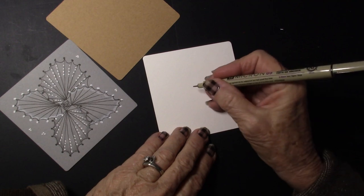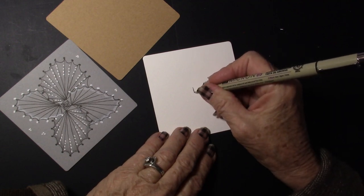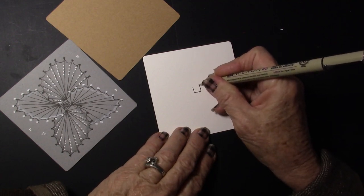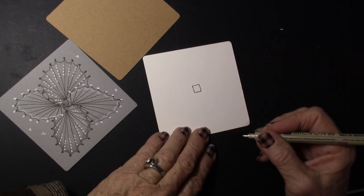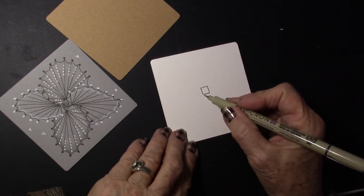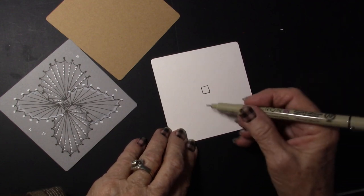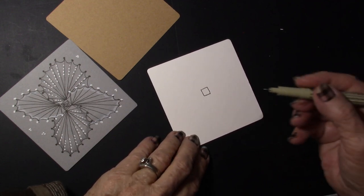So first of all, we're going to draw a square in the center of our tile, just a small square, not very large. You can see that I've just drawn a small, small square.